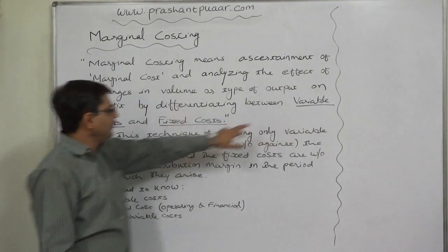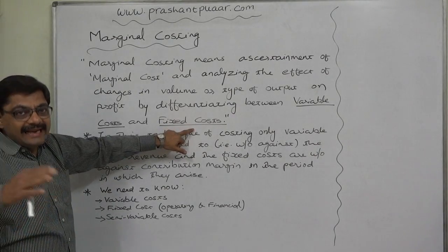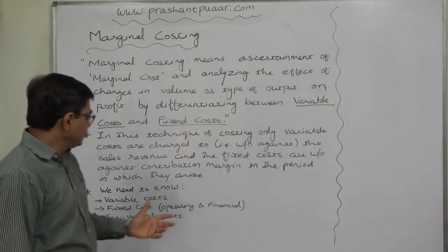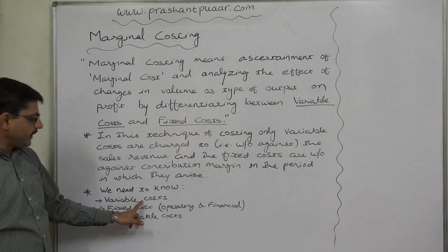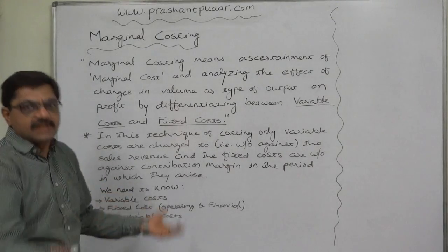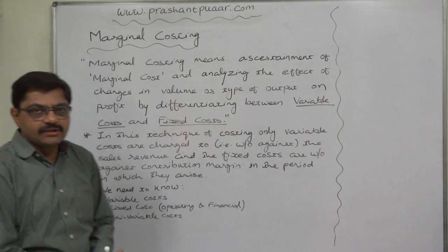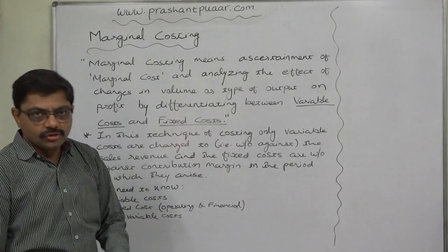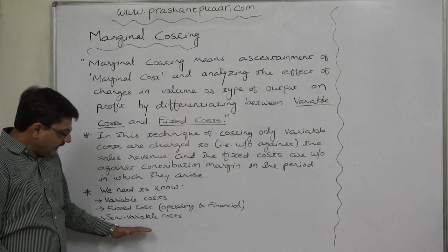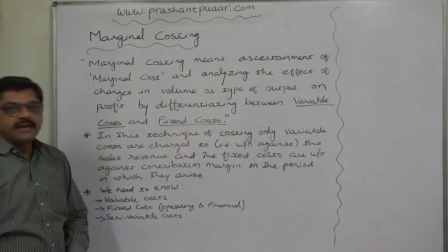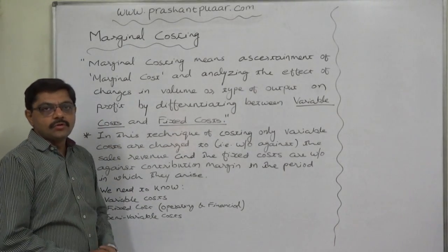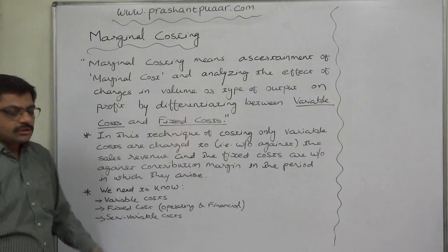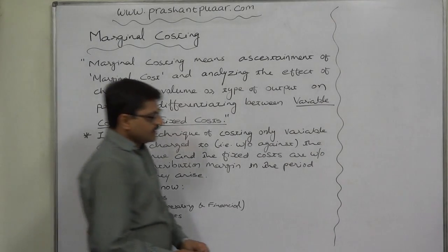Many fixed costs can be indirectly relevant to the production activity. To study marginal costing, we need to know the theoretical meaning and practical identification of variable costs and fixed costs. We can segregate fixed cost into two parts: operating fixed cost and financial fixed cost. In costing, financial fixed costs are not considered, so fixed cost normally means operating fixed cost. We also need to recognize variable cost from total cost and segregate semi-variable cost, which we will discuss separately.